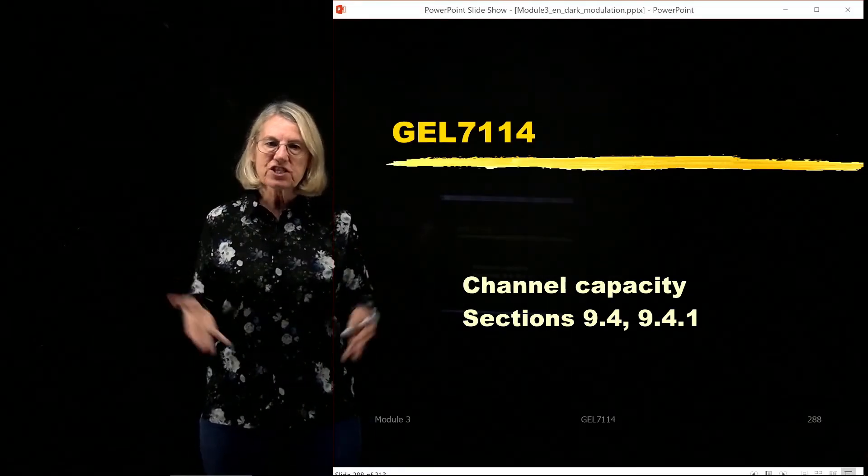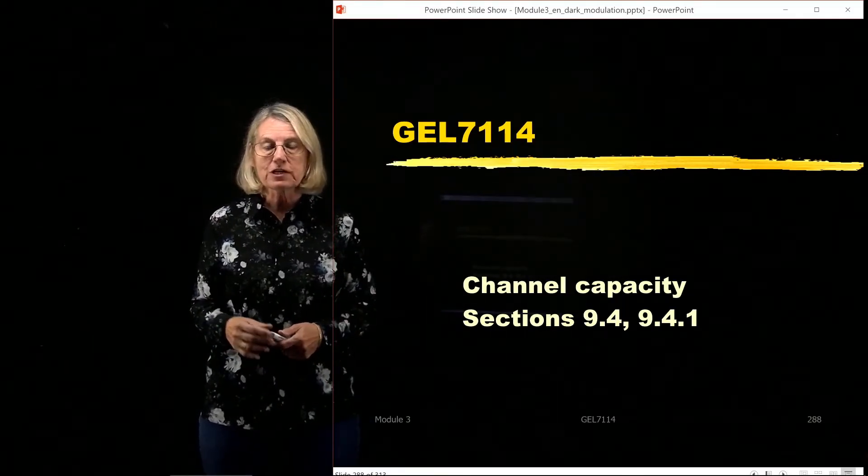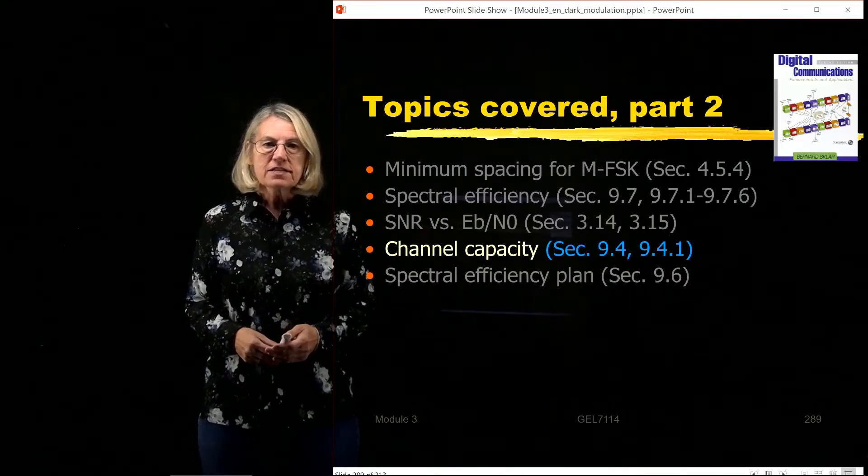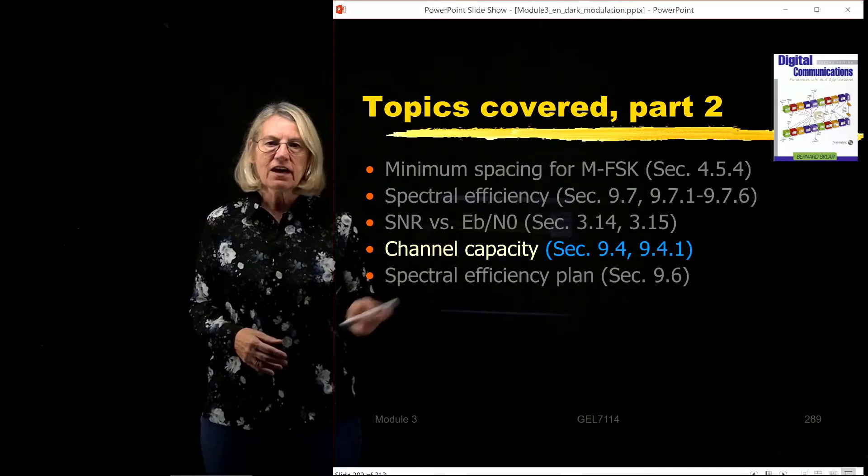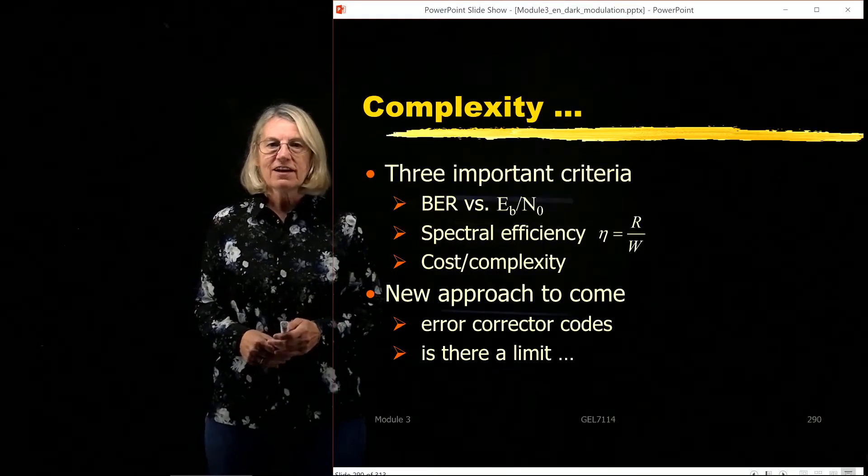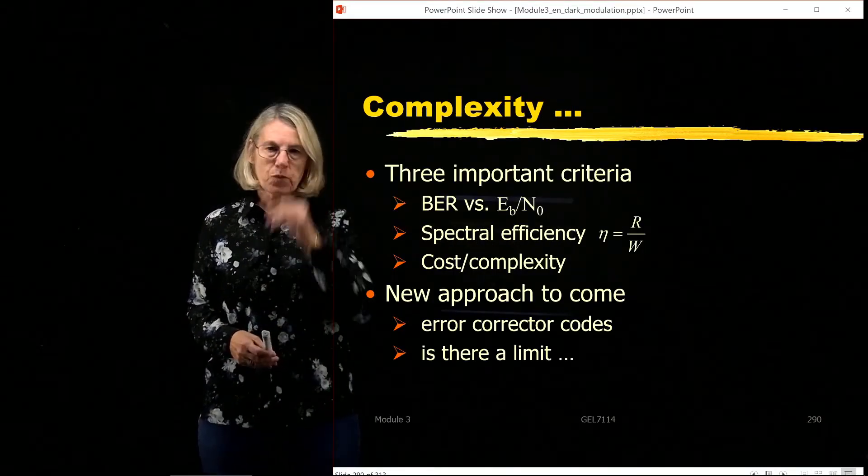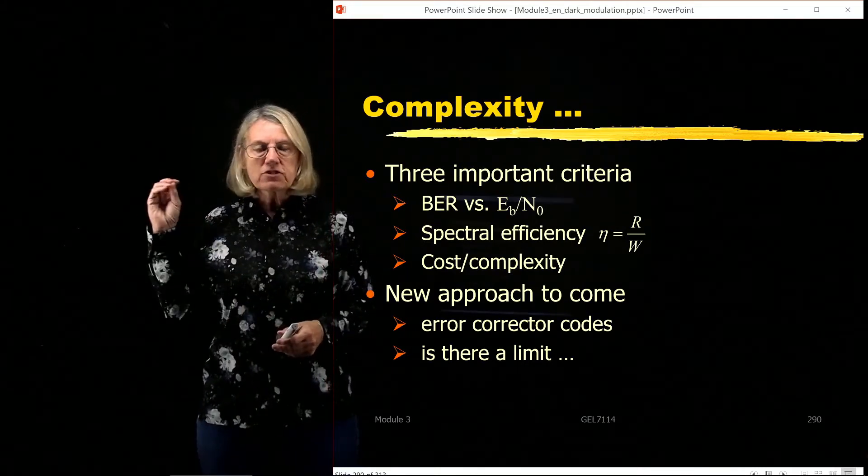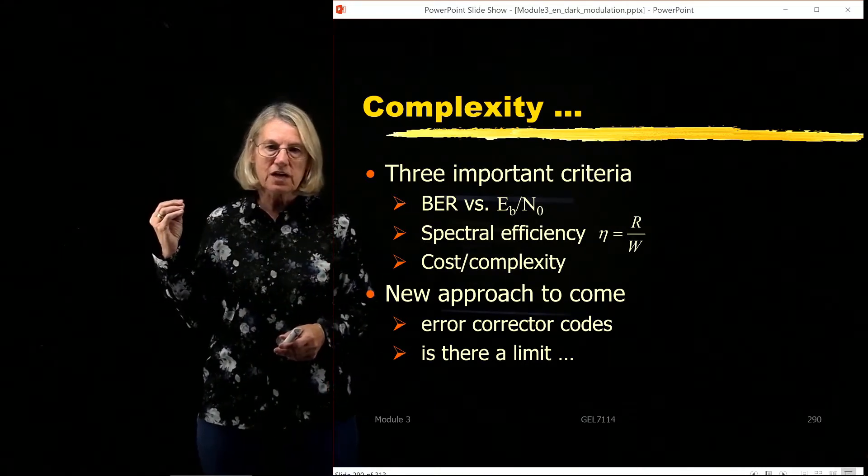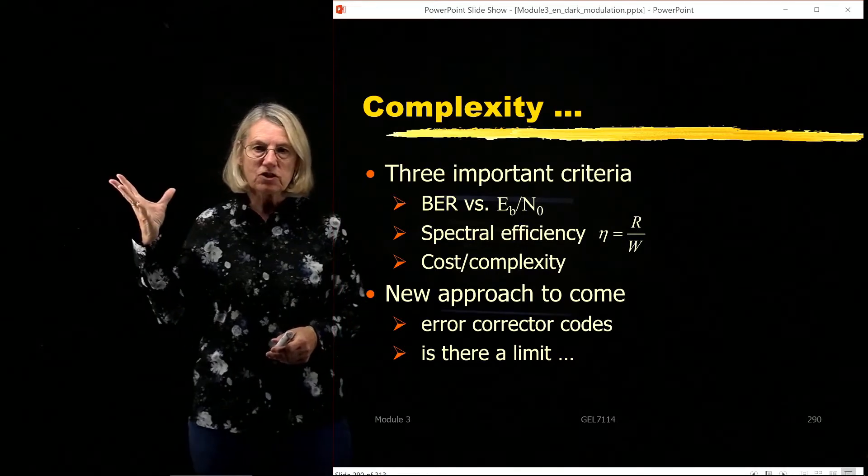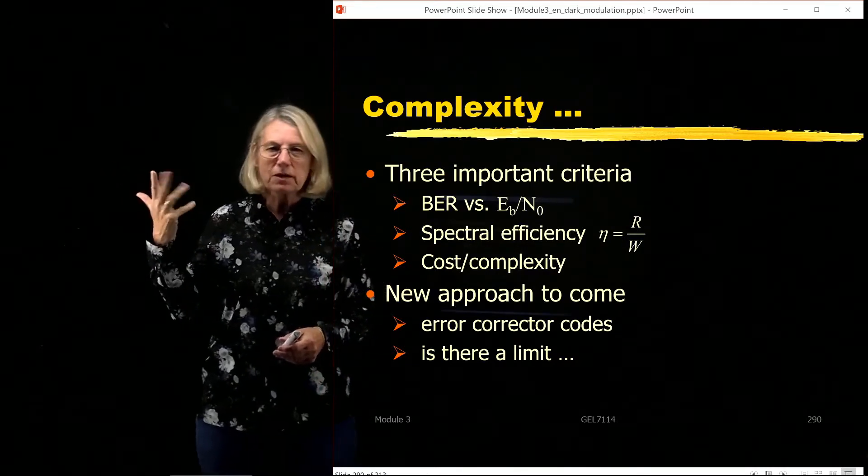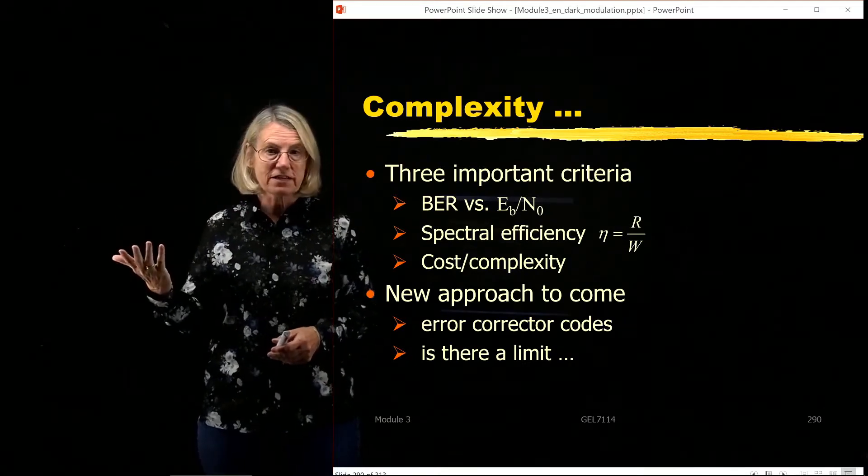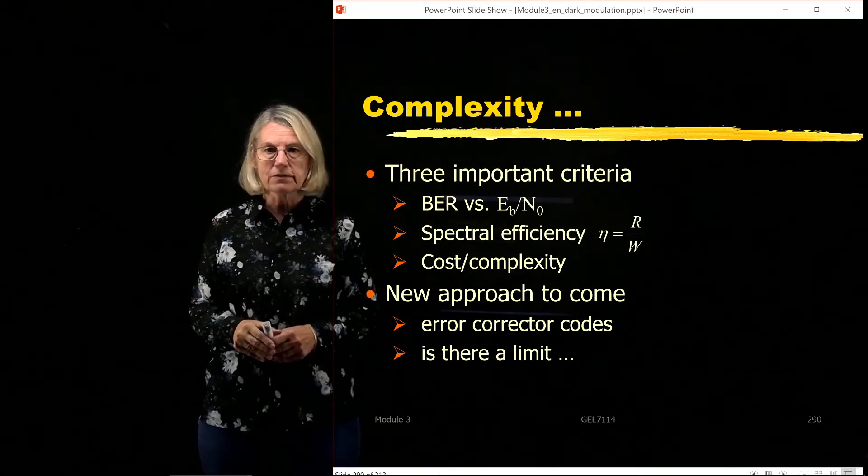Okay, now we come to the discussion of channel capacity, one of the most important concepts in digital communications. This is covered in Chapter 9 of our textbook, and this is where complexity will really come into play. So far we've talked about complexity in terms of receiver complexity, its structure, coherent versus non-coherent. But there's a whole other aspect of it, which is really related to channel capacity.